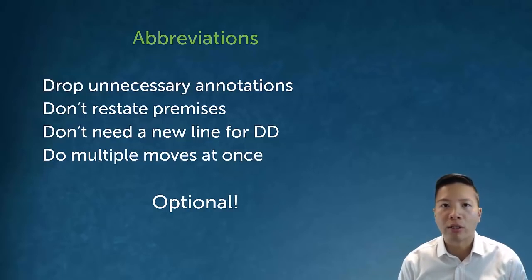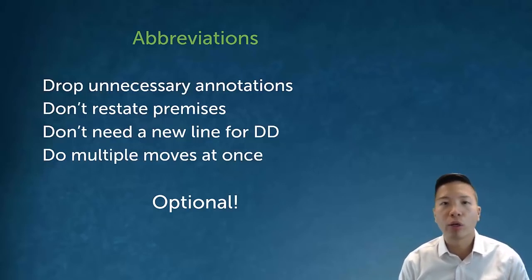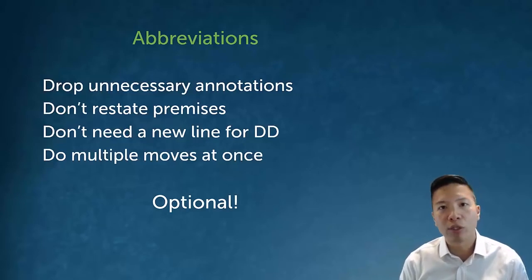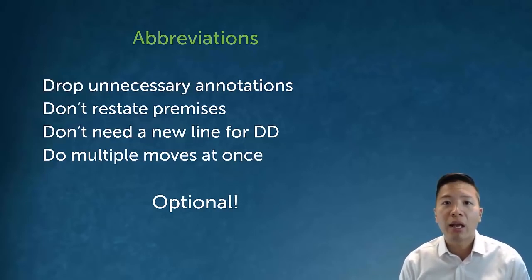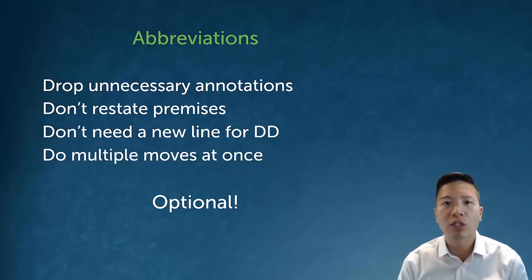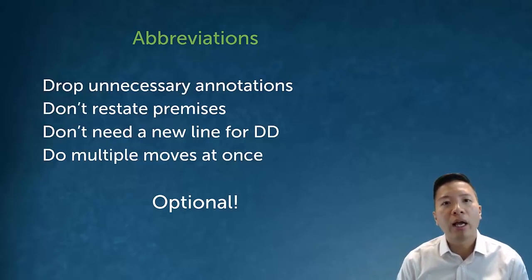Some examples of abbreviations we can use: we can drop certain unnecessary annotations — like we don't actually have to write 'show conclusion'. We don't ever actually need to restate the premises, and from this point forward you will never see me restating the premises. We don't need new lines to say direct derivations, because it turns out we can actually do multiple moves at once.